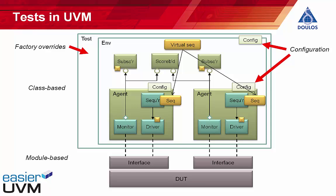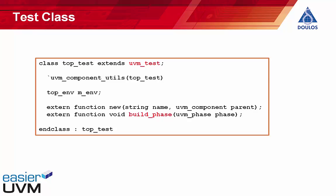Here's a very simple test class. A test class extends the base class UVM test. A test is a UVM component, so it's registered for factory automation with the UVM component utils macro. The test then has a variable that contains a reference to the env, and it has standard constructors and a build phase method in which we're going to instantiate that env and make any other settings that we need.